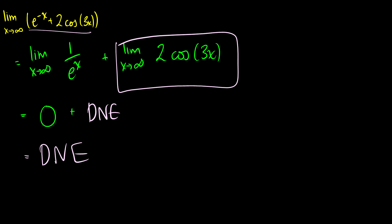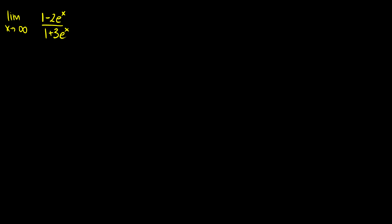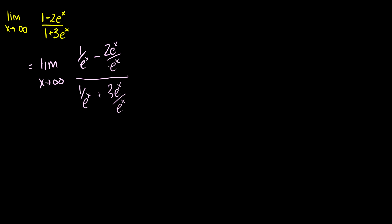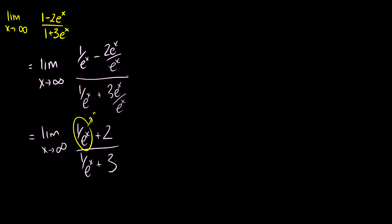Third question: the limit as x goes to infinity of (1 - 2eˣ) / (1 + 3eˣ). These aren't powers of x, but eˣ grows very large, so we divide everything by eˣ. We get (1/eˣ - 2eˣ/eˣ) / (1/eˣ + 3eˣ/eˣ), which simplifies to (1/eˣ - 2) / (1/eˣ + 3). As x goes to infinity, 1/eˣ goes to 0 on both top and bottom, leaving us with -2 / 3. So the limit is -2/3.